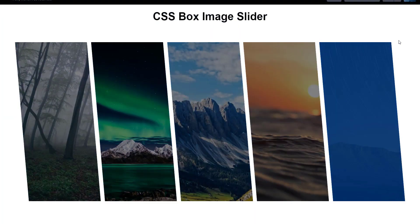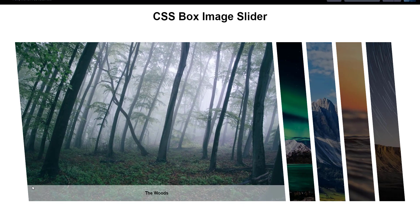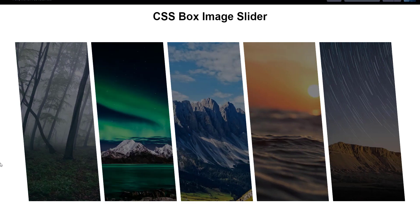Welcome back friends, this is Ramashama here. Today in this video we are going to create a simple box image slider, but this one is a creative one using HTML and CSS. You can see that we have these five images, all in a tilted format with a skew here. When hovering on any image, the image is expanding.